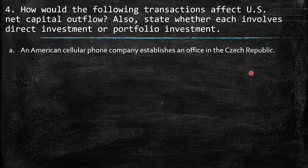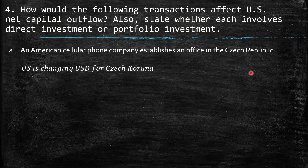Question 4: How would the following transactions affect US net capital outflow? Also state whether each involves direct or portfolio investment. A: An American cellular phone company establishes an office in the Czech Republic. The US is exchanging USD for Czech koruna. We have net capital outflow higher than zero because domestic people have foreign assets. This is more about direct investment.